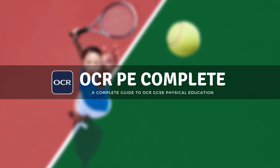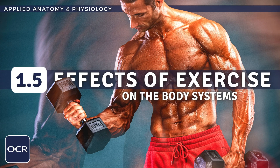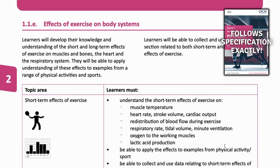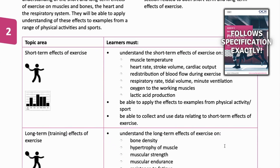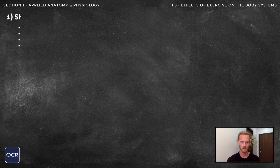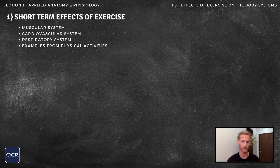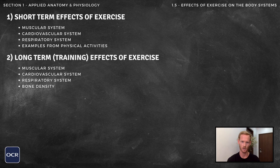Welcome to another complete OCR GCSE PE lesson where you'll learn everything you need to know on topic 1.5, the effects of exercise on the body systems. Following the OCR syllabus exactly, for topic 1.5 you need to know about the short-term effects of exercise on the muscular, respiratory and cardiovascular systems, and the long-term effects of training.